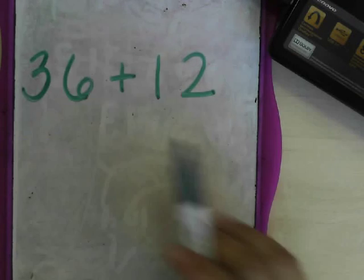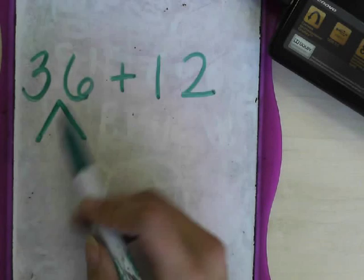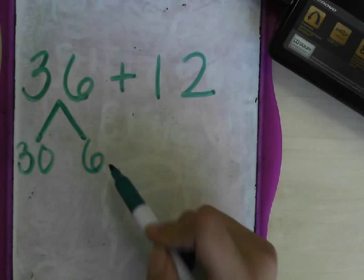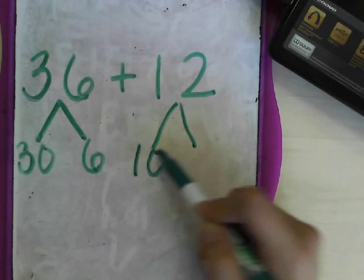Let's look at 36 add 12. 36 breaks down into 30, 3 tens is 30, and 6. 12 breaks down into 1 tens and 2.